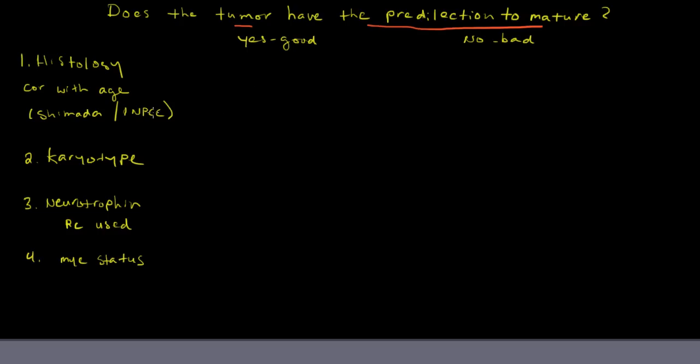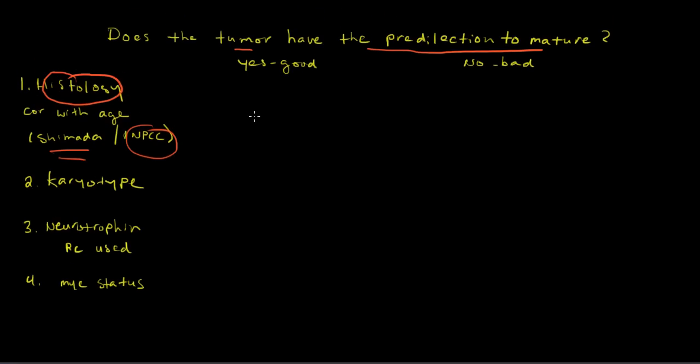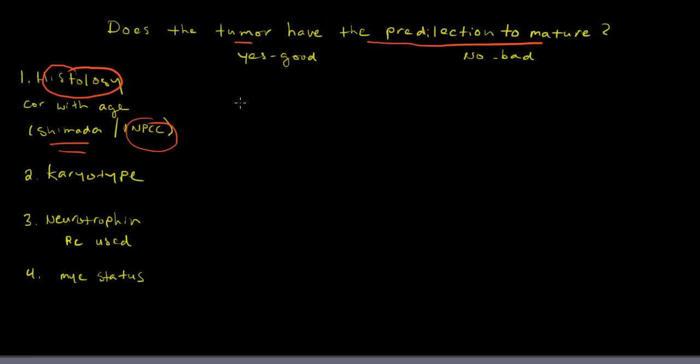So from a purely morphological, histopathological basis, either the Shimada or lately it's been called the INPC classification, you put in your classification scheme and the pathologist comes up with either an unfavorable histology or a favorable histology. So if you come up with favorable histology, then the tumor is felt to have the predilection to mature.